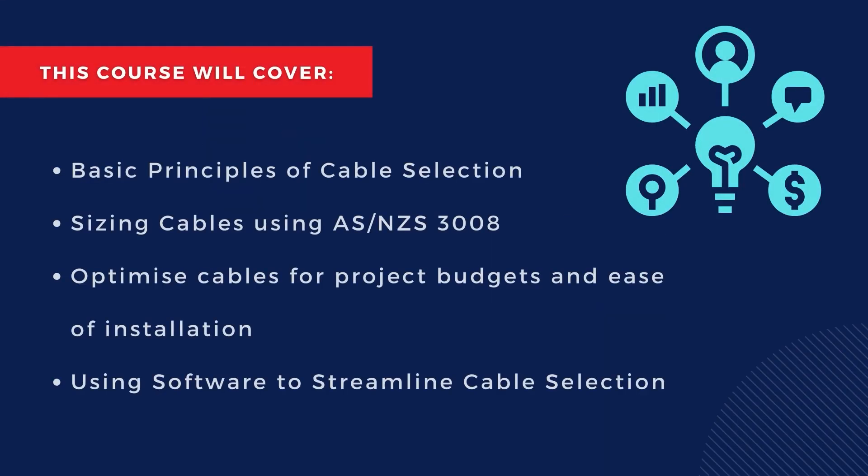The course content includes basic principles influencing cable selection, using AS/NZS 3008 to size cables in a PV system according to their current-carrying capacity, voltage drop or rise, and short circuit temperature limit. It also covers how to optimize cables for project budgets and ease of installation, and how to streamline cable selection using software.